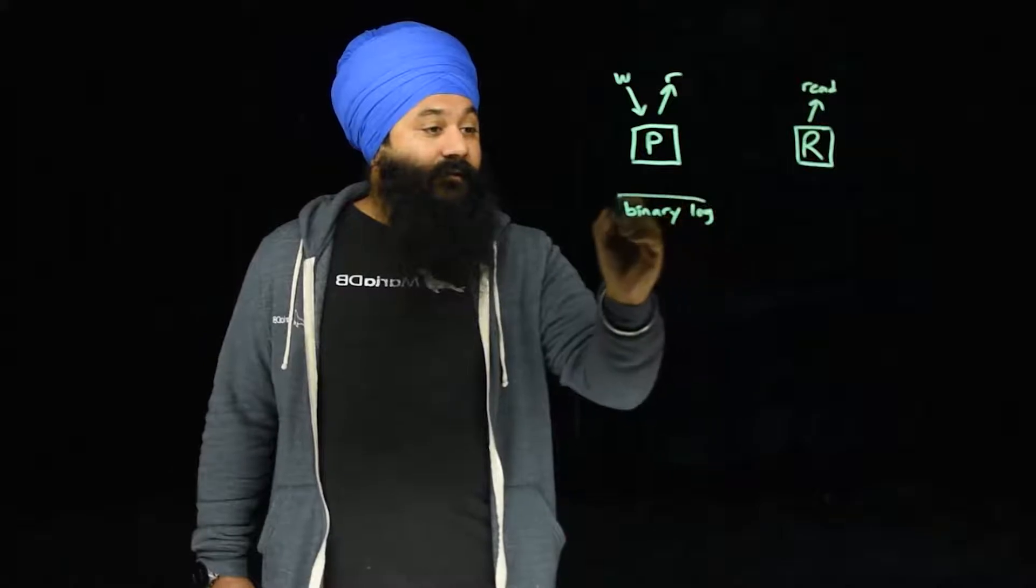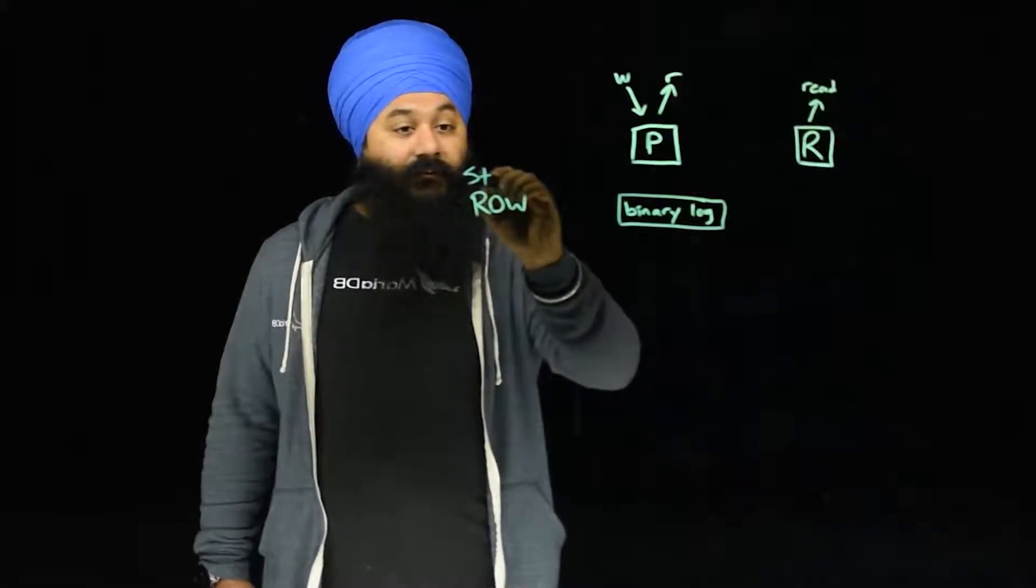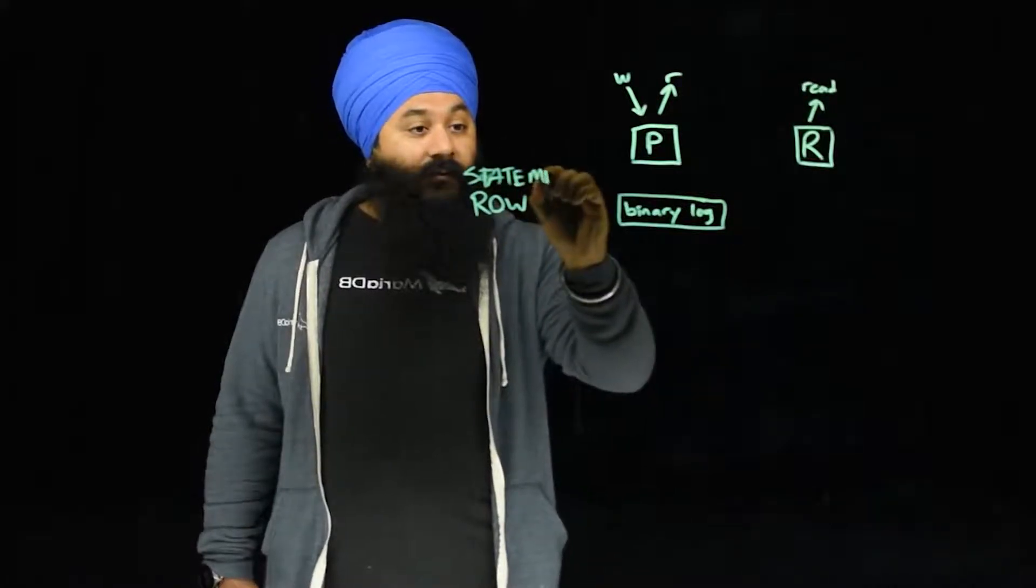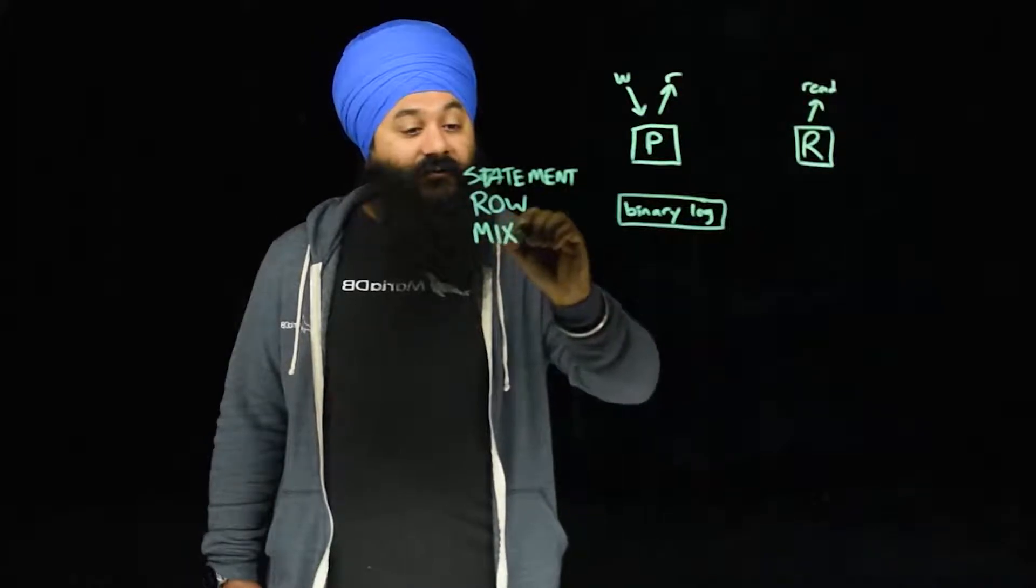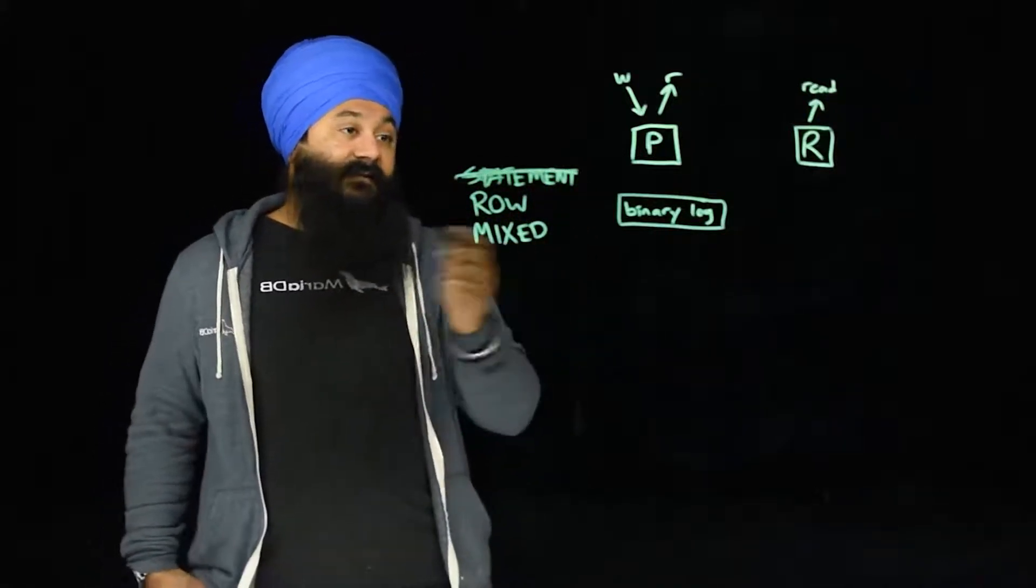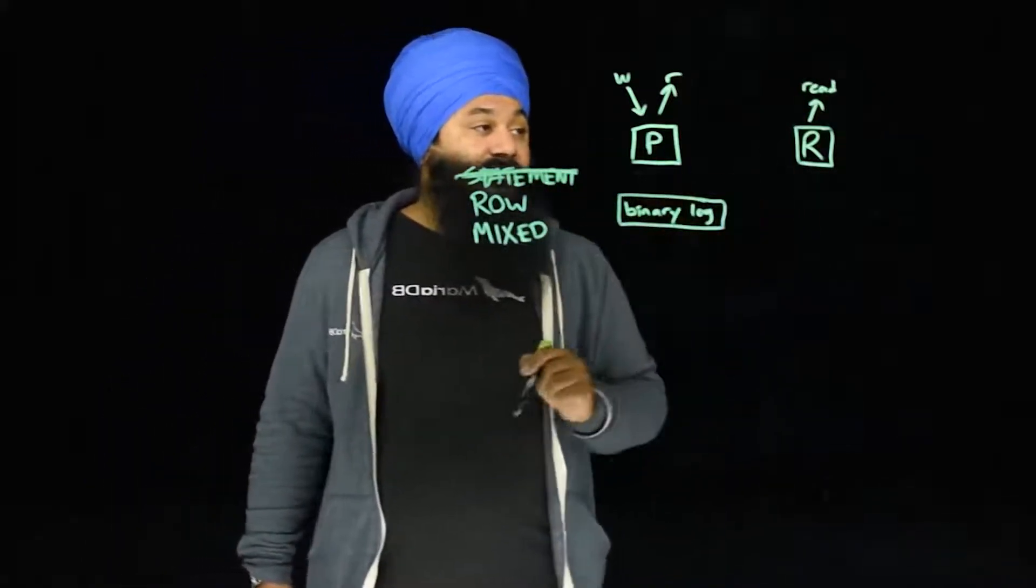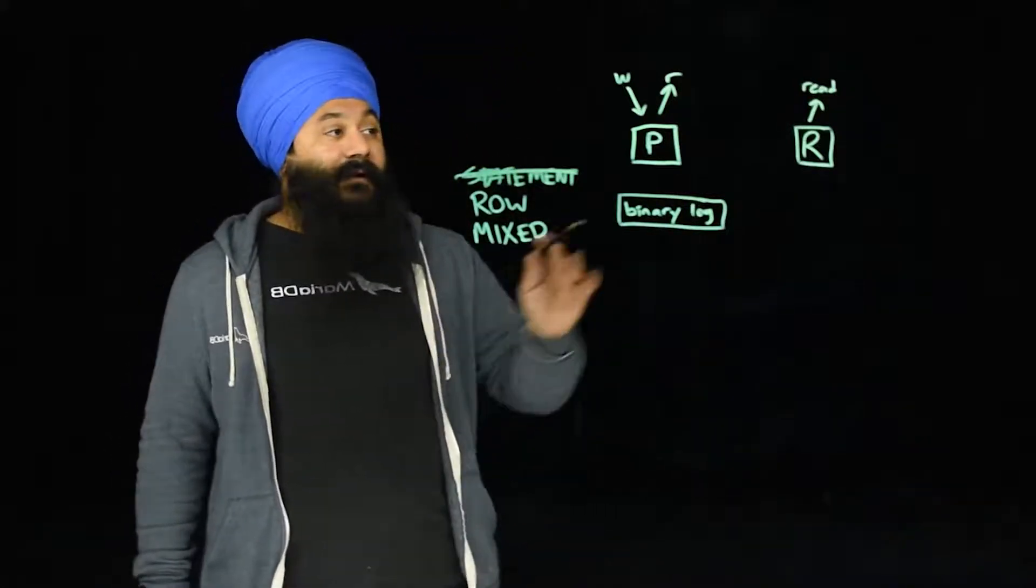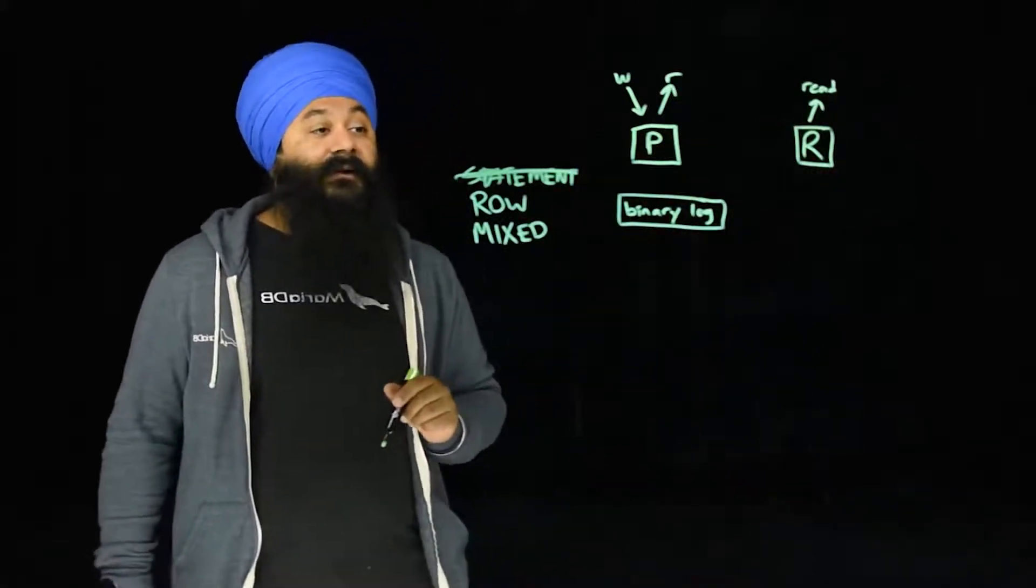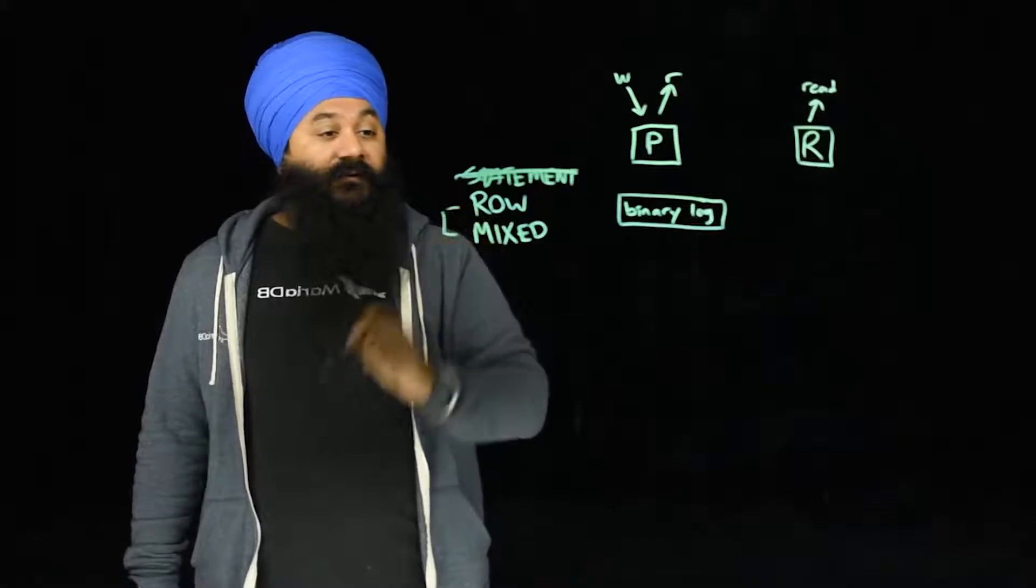And that binary log is written in either row or mixed format, which is a combination of the two depending on what the transaction is. We recommend you don't use statements. And the reasoning for that is statement can be non-deterministic. So that means if you do insert now on the primary and that gets replicated to the replica, that will actually insert the time or there's a chance that it will insert the time that it was written on the replica and not the exact same data as the primary. There's definitely use cases for that, but the majority of our topologies suggest row or mixed.